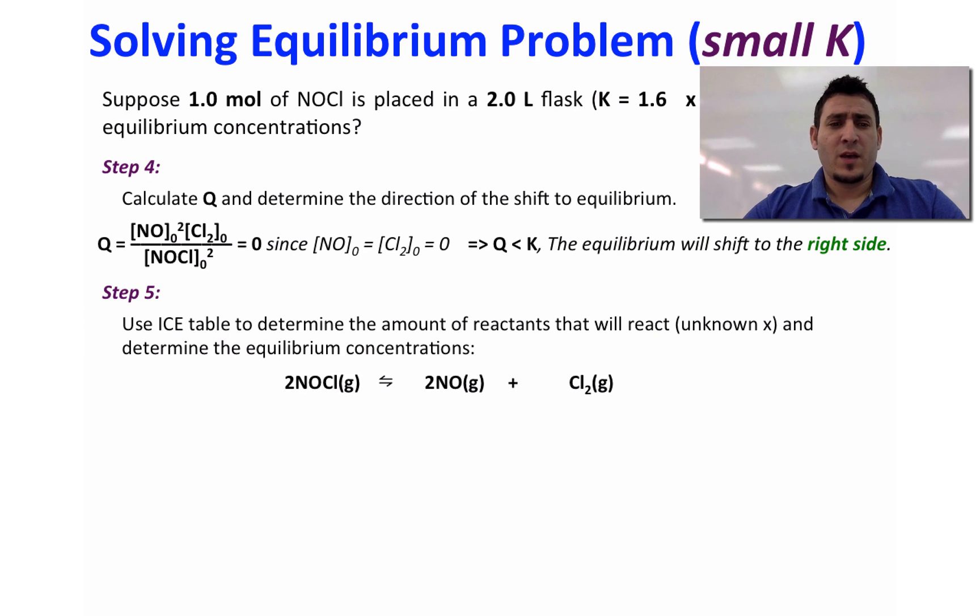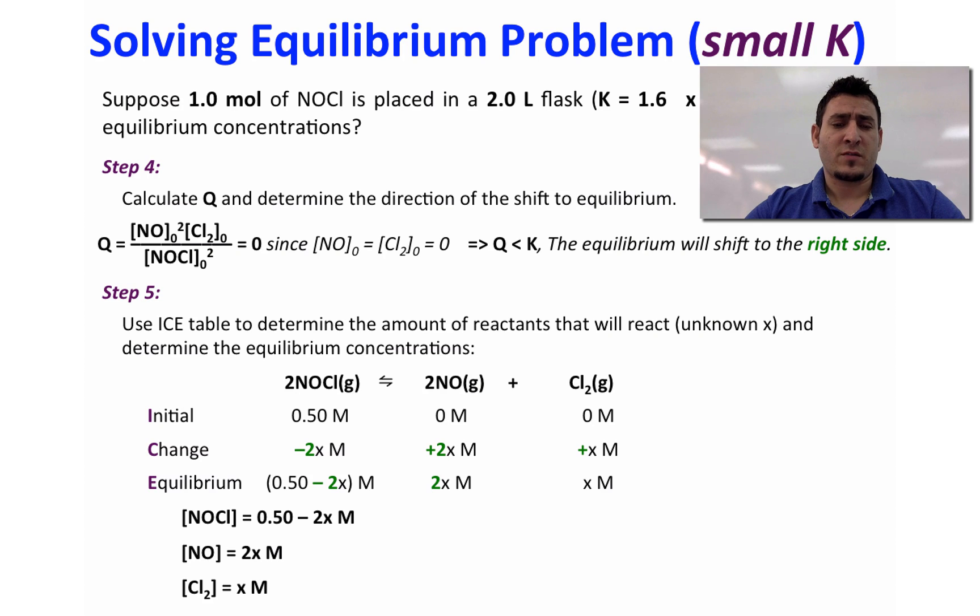In step 5 we will use ICE table to find the equilibrium concentrations. So therefore if initially we had only 0.50 molar of NOCl, 0 molar of NO and 0 molar of Cl2, after 2x of NOCl are consumed we will form 2x of NO and 1x for Cl2. So at the equilibrium we will have 0.50 minus 2x for NOCl, 2x for NO and x for Cl2. Now we can list the equilibrium concentrations in terms of X.